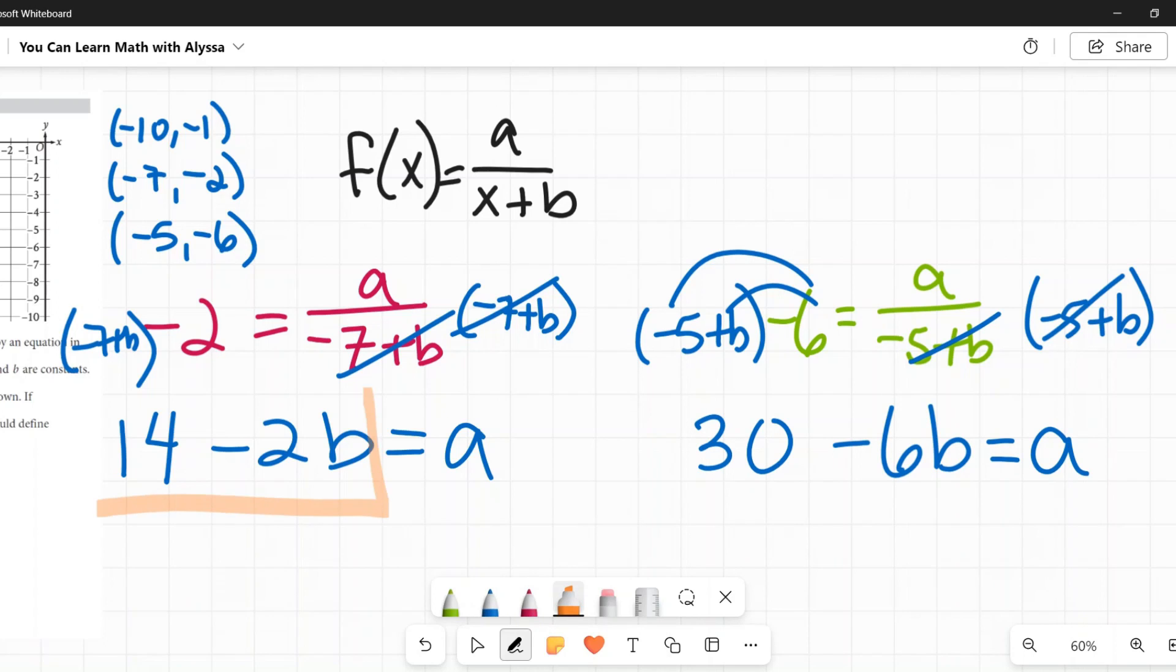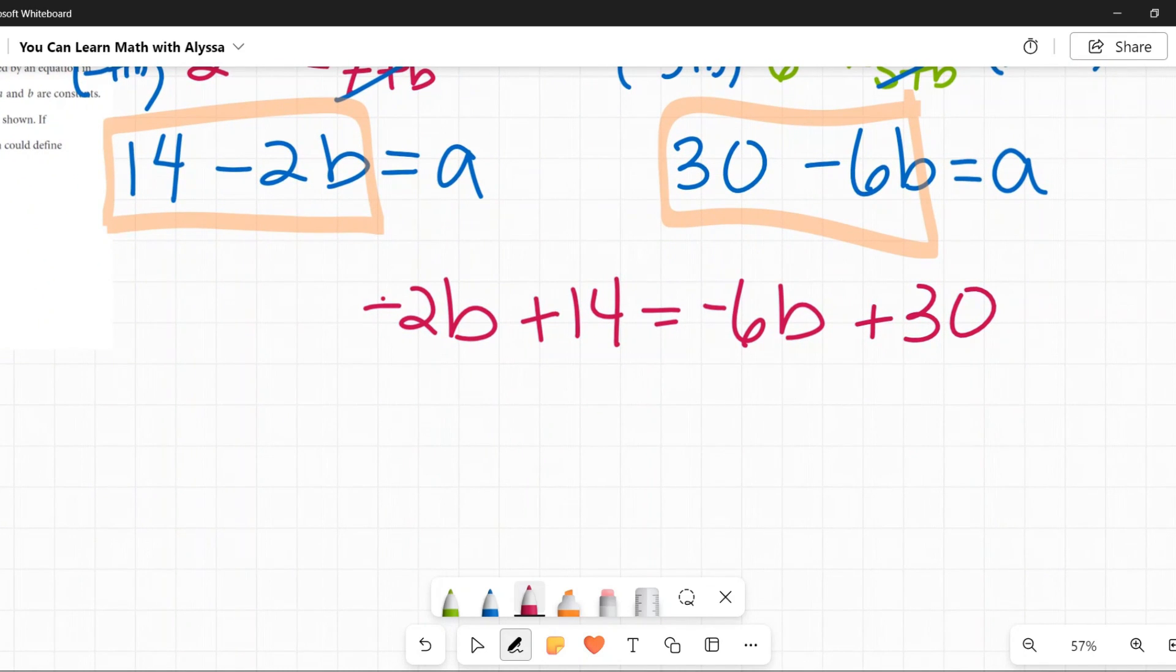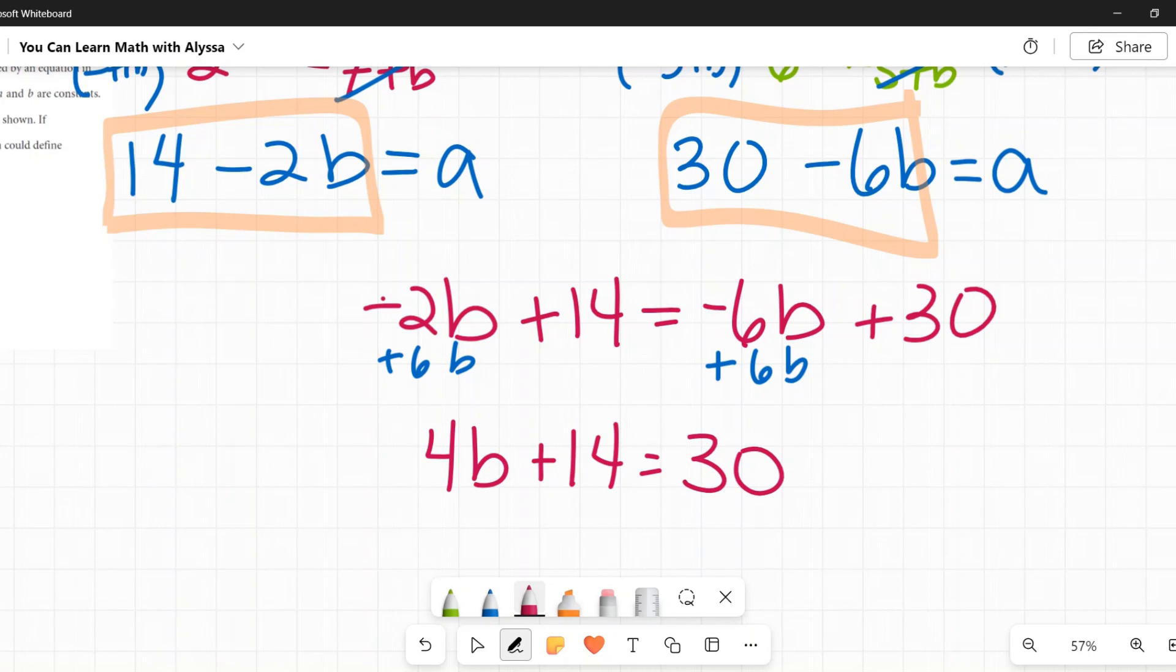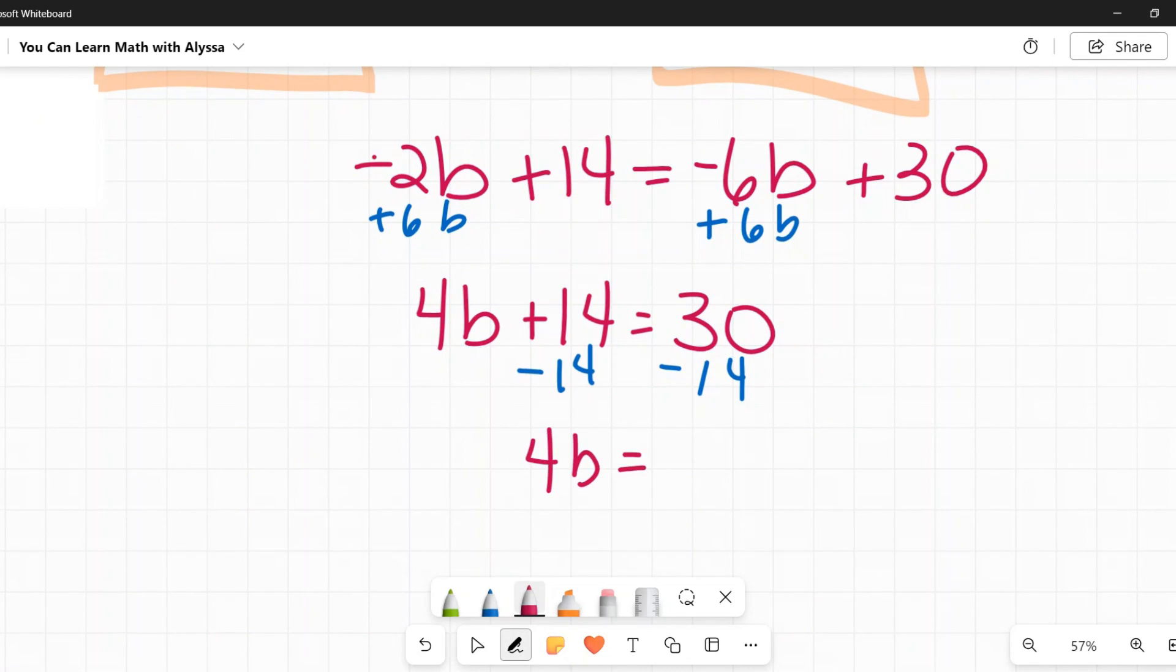Now I have something that is really nice because I have 14 minus 2b is equal to a. And 30 minus 6b is equal to a. So these are equal to each other. They're both equal to a. So they're equal to each other. I can set them equal to each other and I can solve for b. And from there, I can solve for a. All right. So I'm going to reorder them. Put the variables first. Negative 2b plus 14 equals negative 6b plus 30. I am going to add 6b to both sides. So negative 2b plus 6b is 4b. And then I'm going to get rid of the 14 by subtracting it from both sides.